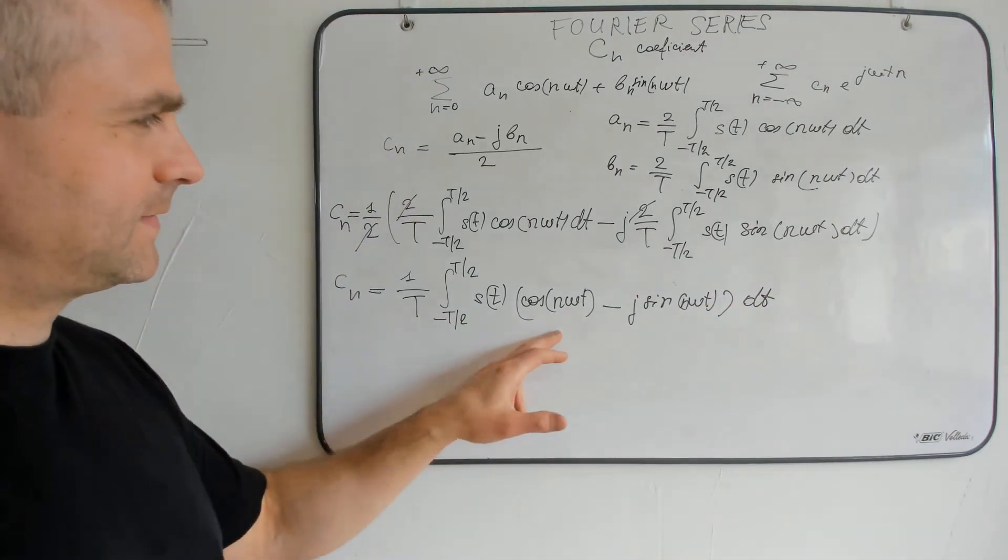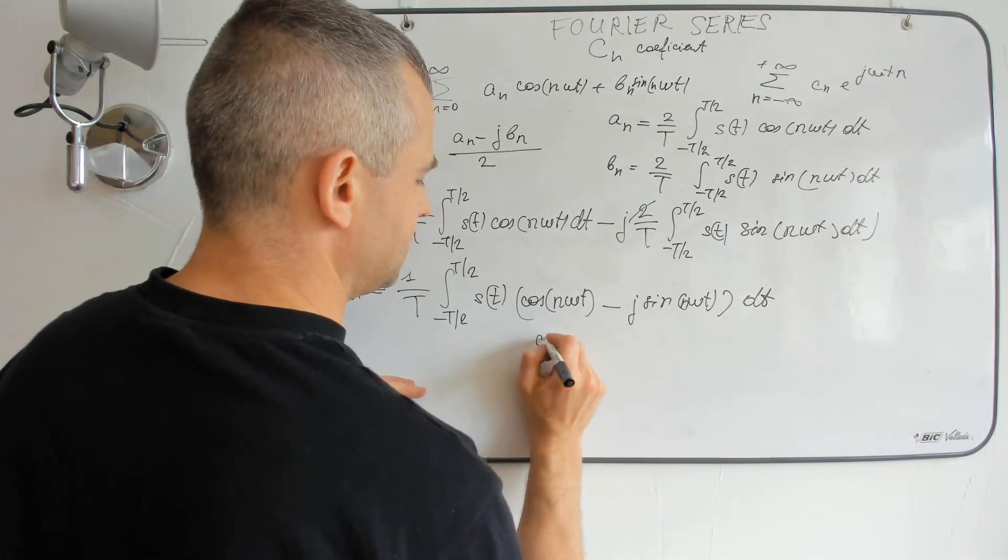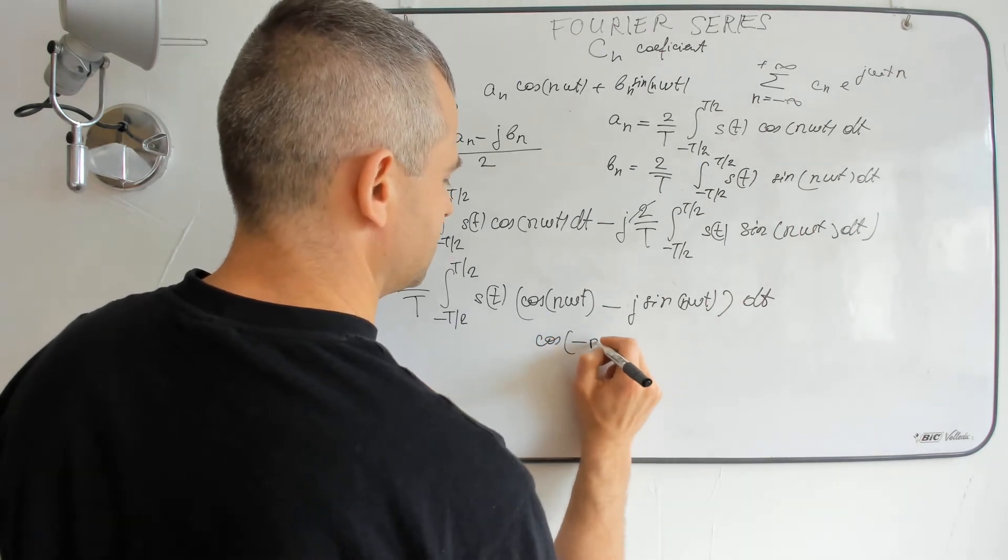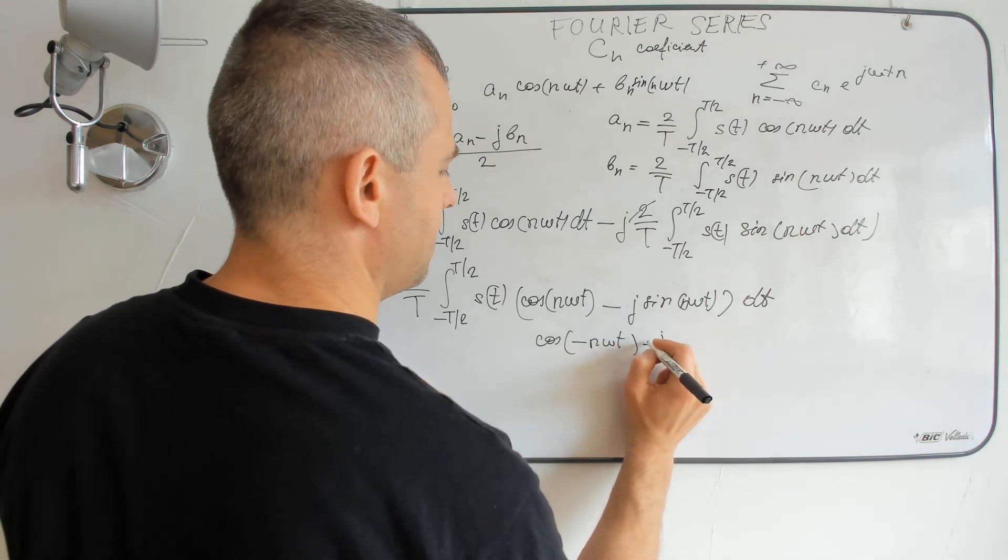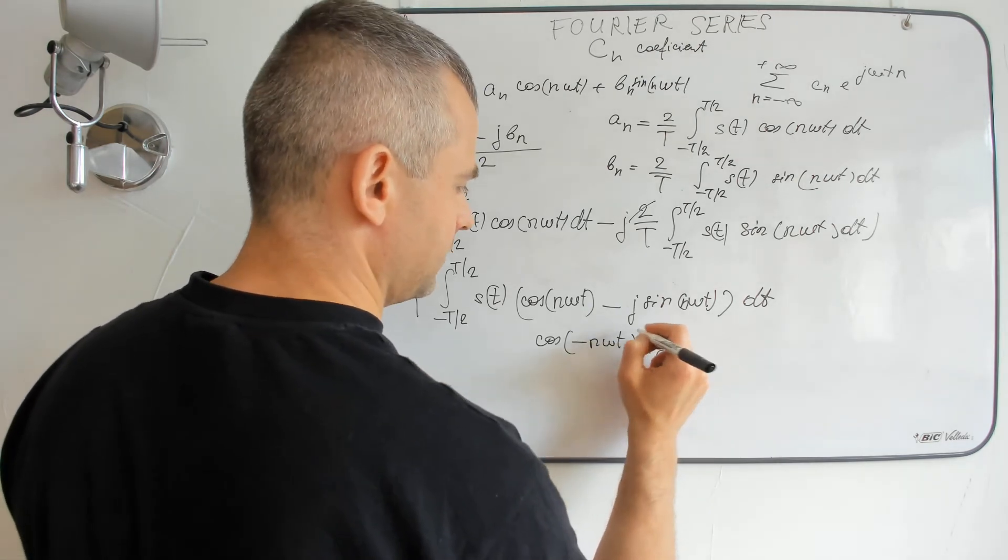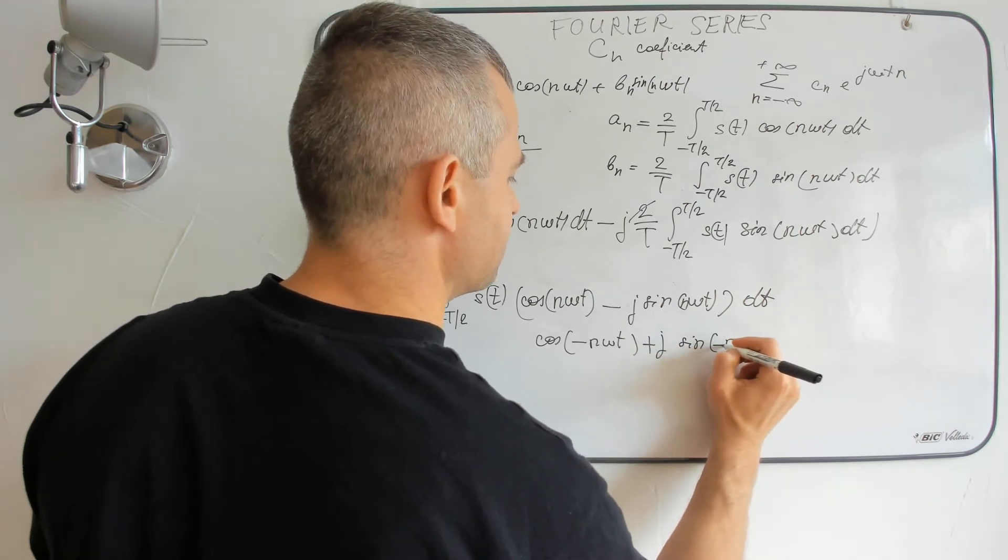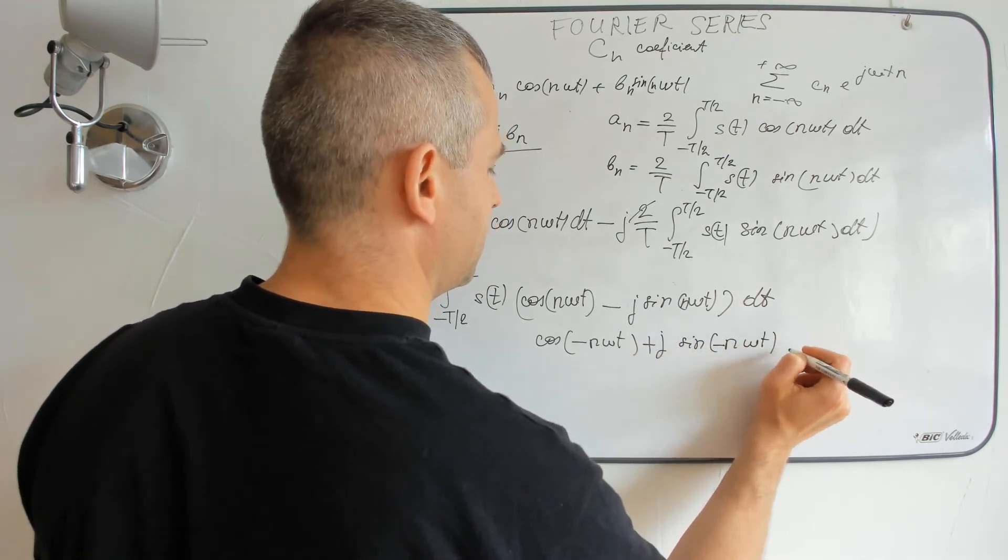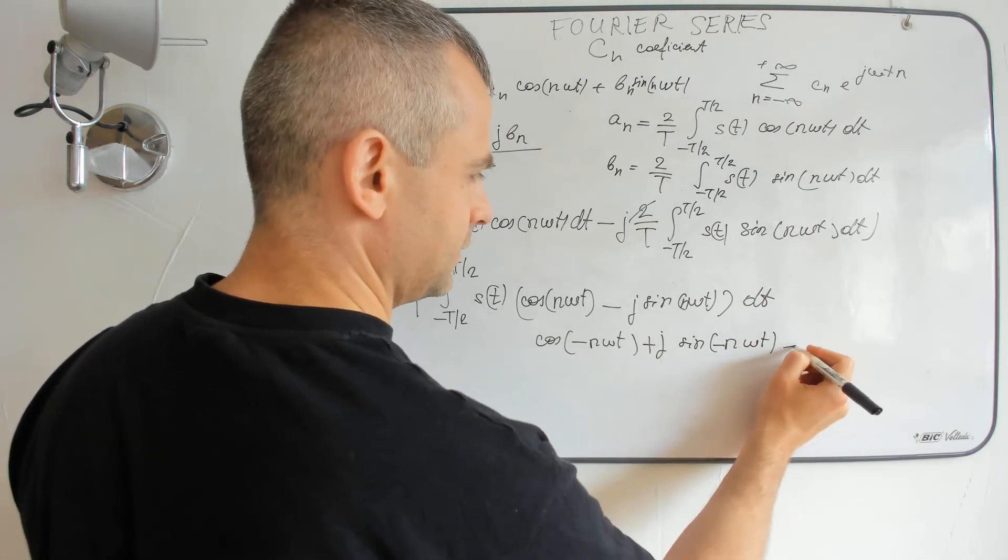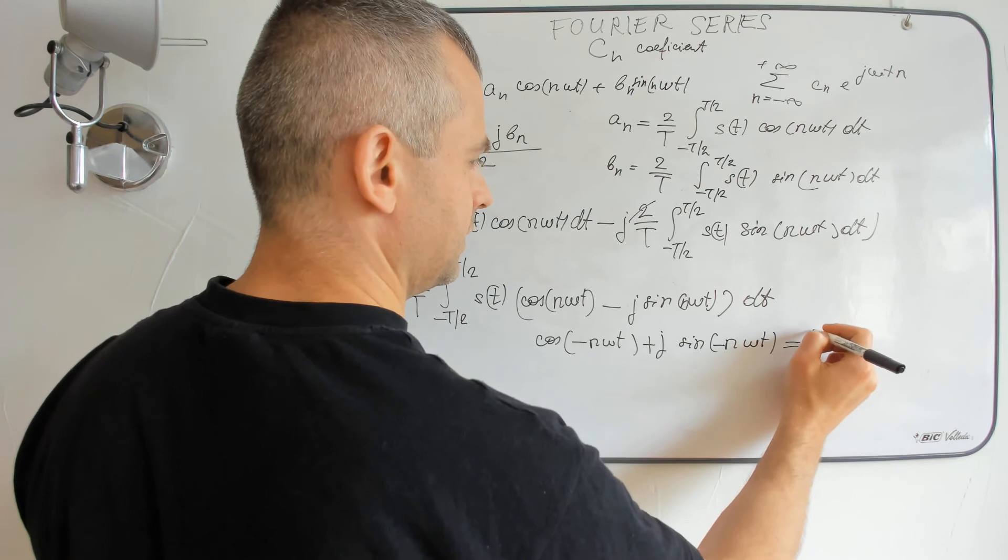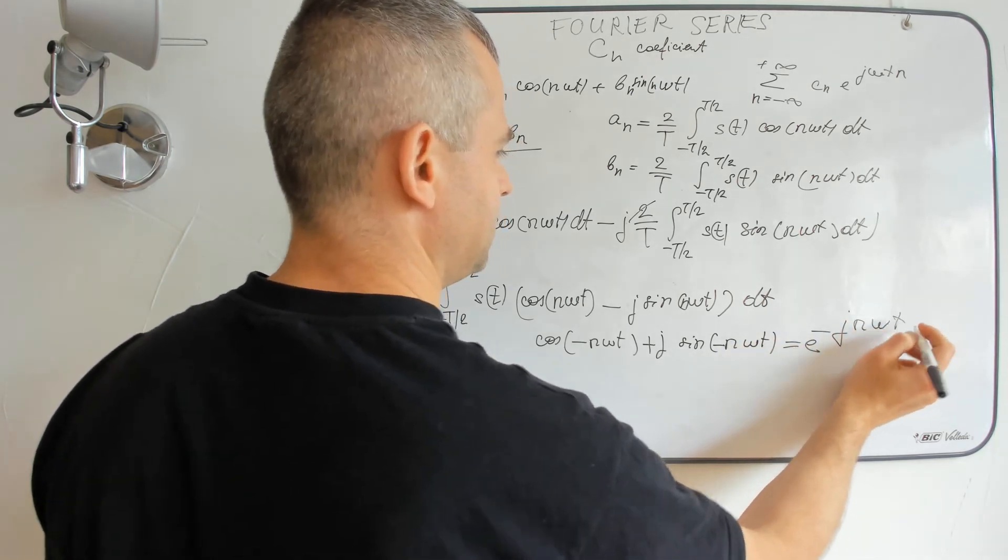But what's this relation? This can be written as cos(minus n omega t) plus j sin(minus n omega t), which is actually the exponential of minus j n omega t.